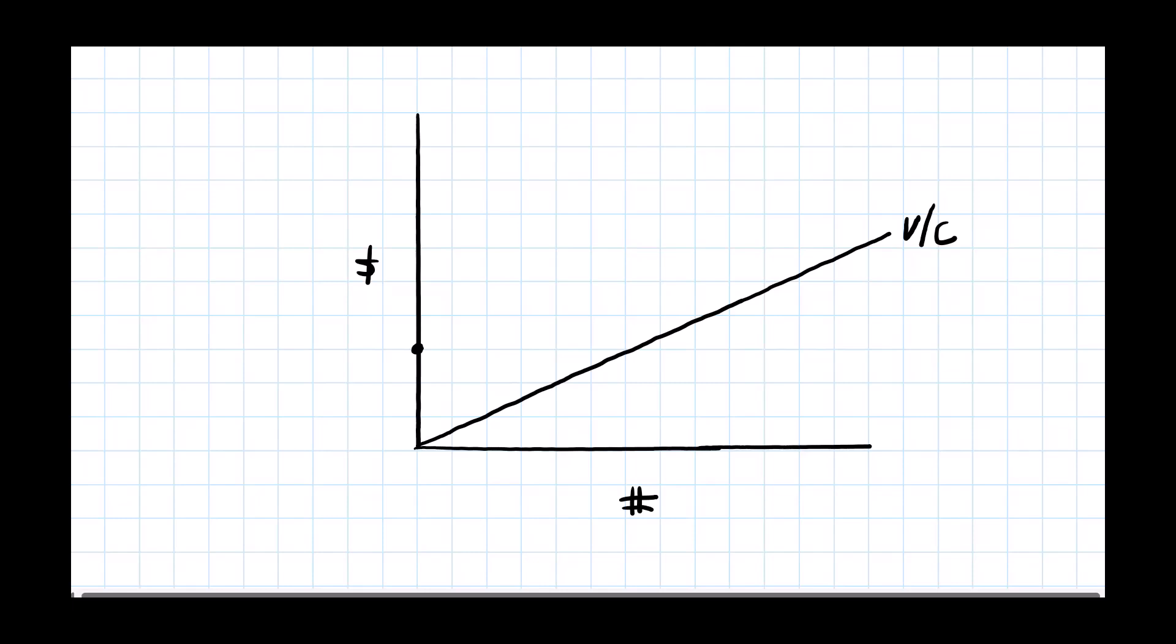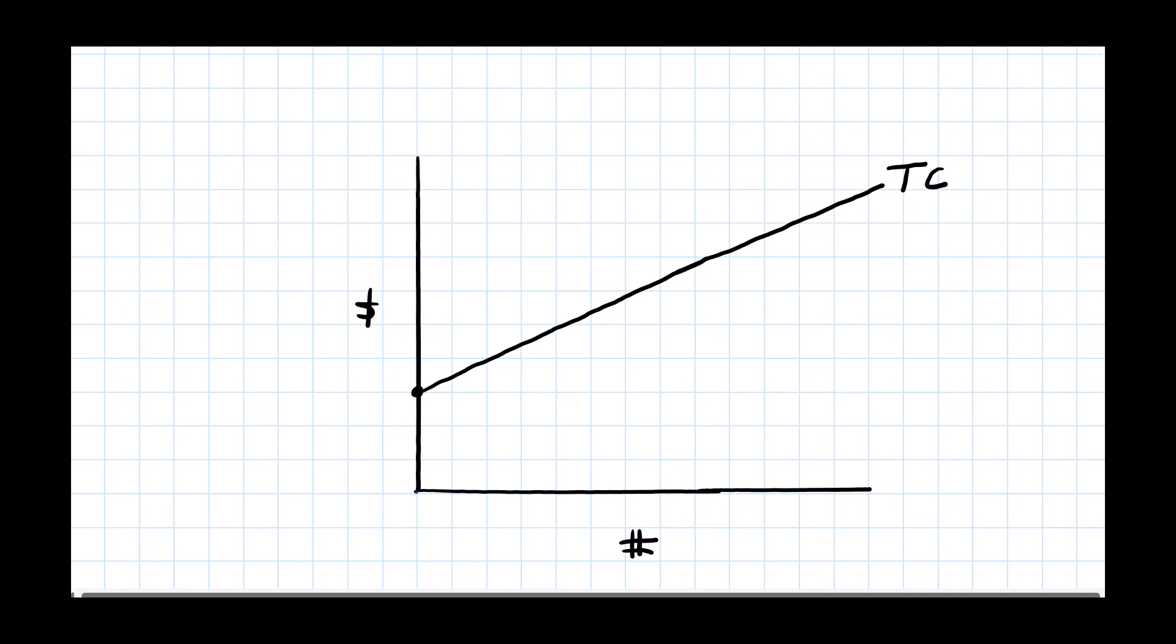Now if I add the variable costs to our fixed costs, our total variable costs to our fixed costs, then we have our total cost line right here on our break-even chart. Now we can add our total revenue to our break-even chart and that would look something like this. And I can use TR for total revenue.